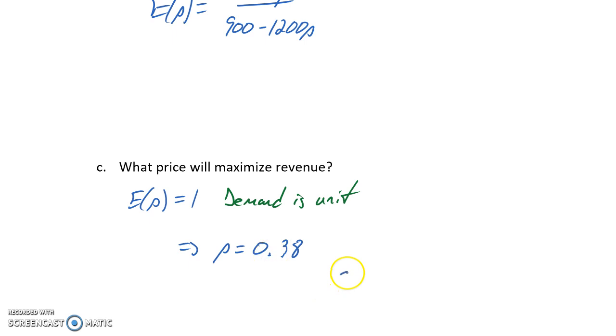Our optimal price point for the item in this scenario is 38 cents. If we increase or decrease price from this point, we would see the same change in demand, so there would be no effect on revenue.